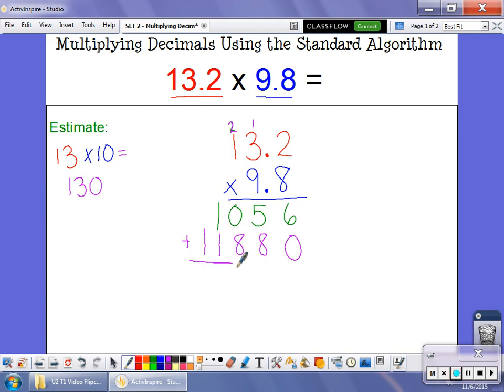And my last step when I do my multiplication standard algorithm is I'm going to add these up. So 6 plus 0 is 6. 8 and 5 is 13. 8 plus 1 is 9. 1 plus 1 is 2. And 1.